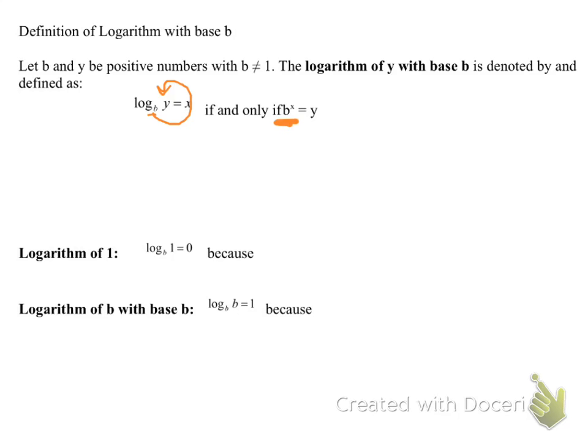So this first example, logarithm of 1. log_b(1) = 0, because if we do the loopy thing, we get b^0 = 1. And that is indeed true. Anything raised to the 0 power is 1. If we do the loopy thing on the second one, logarithm of b with base b, again, b^1 = b. And again, that makes sense. It's true.